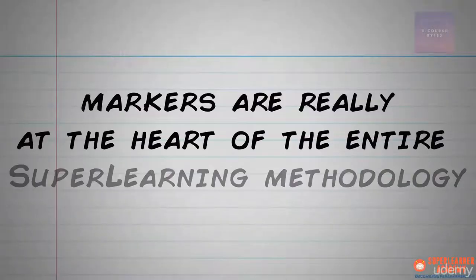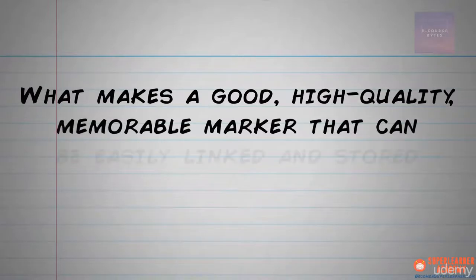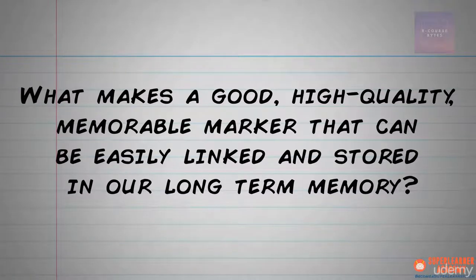You probably have a lot of questions and are wondering how you're going to learn how to do what you just saw. As you've likely figured out by now, markers are really at the heart of the entire superlearning methodology, and for this reason we'll spend a good amount of time understanding and practicing them in very nitty-gritty detail. So what makes a good, high-quality, memorable marker that can be easily linked and stored in our long-term memory? Why did I choose the specific images I did in the demonstration video?